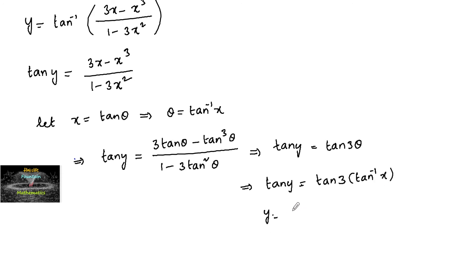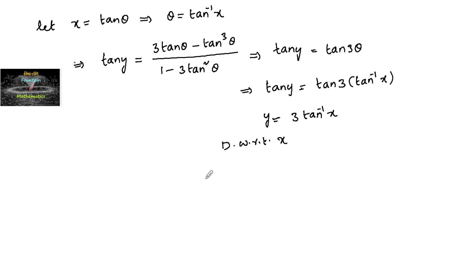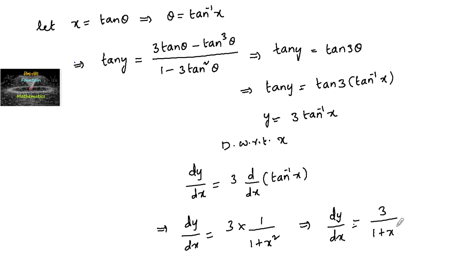Therefore y is equal to 3 tan inverse x. Now differentiating with respect to x, we get dy by dx is equal to 3 times d by dx of tan inverse x. The differentiation of tan inverse x is 1 upon (1 plus x square), so dy by dx is equal to 3 divided by (1 plus x square).